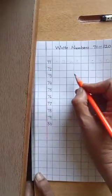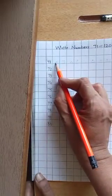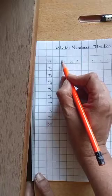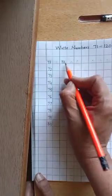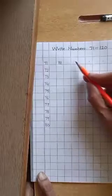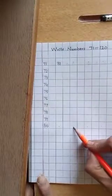After 80, what comes children? 81. You have to leave one box and start here from 81. 81 to 90, then 91 to 100.